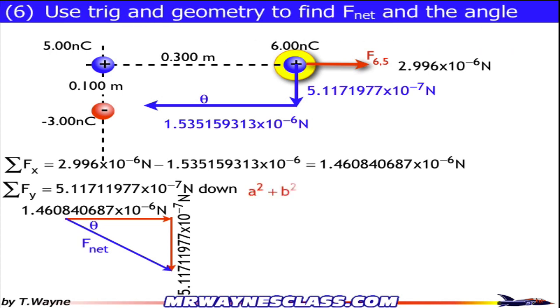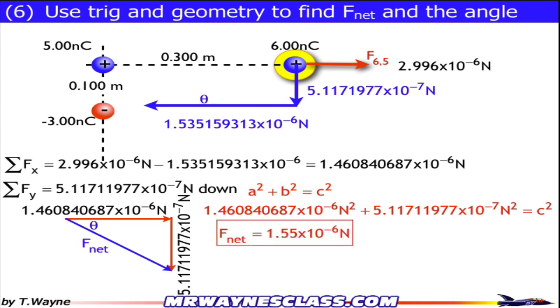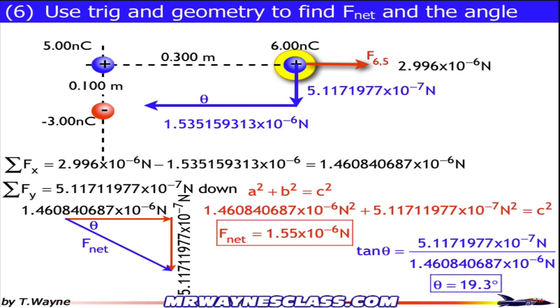This is a different triangle from what we did at the top. It's a solutions triangle, not our initial givens triangle. So to find the magnitude of F net, I'll use a squared plus b squared equals c squared. Using the lengths of that triangle, I get that c, which is the net force, is 1.55 times 10 to the negative 6 Newtons. And to find the angle, I'll use tangent theta equals opposite over adjacent using the sides in the triangle. And I get that theta equals 19.3 degrees.